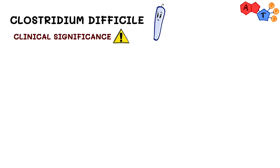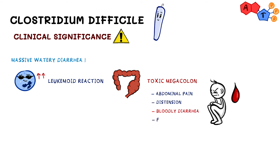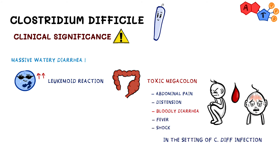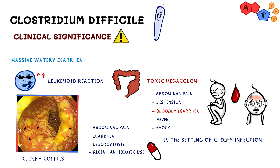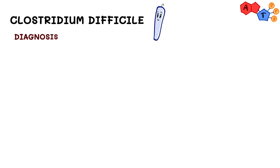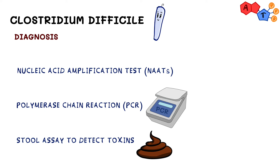Infection with C. diff leads to massive watery diarrhea, and in severe cases it can cause a leukemoid reaction or toxic megacolon. A patient with abdominal pain, distension, bloody diarrhea, fever, and shock in the setting of C. diff is most likely presenting with toxic megacolon. A classic case of C. diff colitis would be a patient who presents with abdominal pain, diarrhea, leukocytosis, and recent antibiotic use. For diagnosis, a nucleic acid amplification test or PCR can be used, and stool assay can detect C. diff toxins.